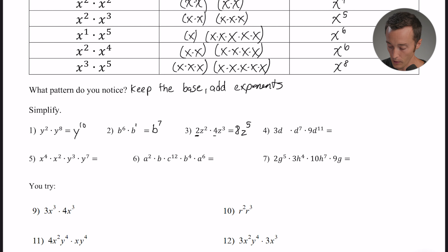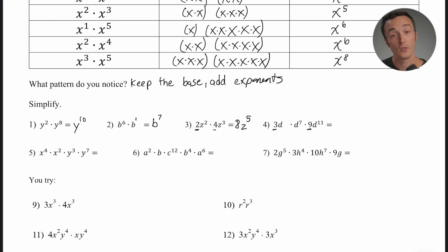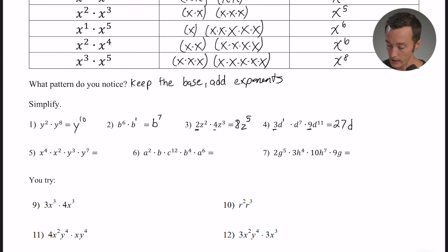Number four is a bit more complicated — we have three terms: 3d times d to the seventh times 9d to the eleventh. First, multiply the coefficients: 3 times 9 is 27. Then keep the base d and add up the exponents — this first d is d to the first, so 1 plus 7 is 8, plus another 11 is 19. The final answer is 27d to the nineteenth power.